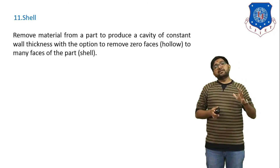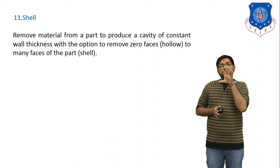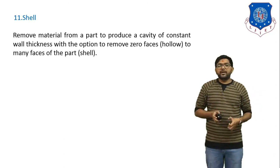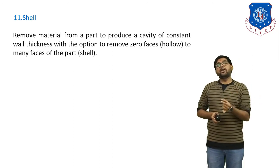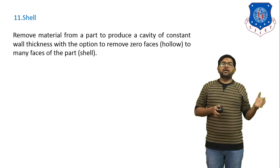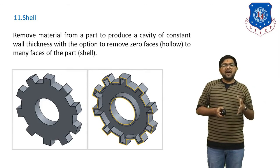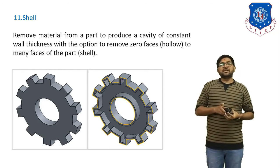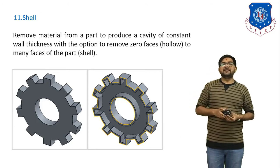Next is the shell feature. Shell means we generate a hollow portion inside an object. It removes material from a part to produce a cavity of constant wall thickness — the outer body maintains a constant thickness and the inside material is removed. In the example, one solid object is selected, the shell feature is applied with a wall thickness of 10 mm, and all outer body edges become 10 mm thick while the inside is hollowed out.